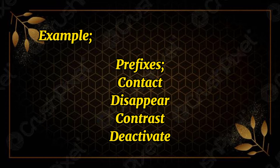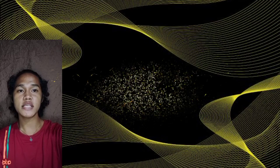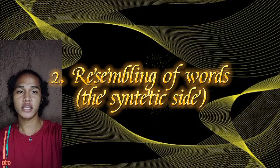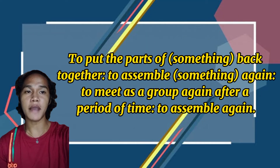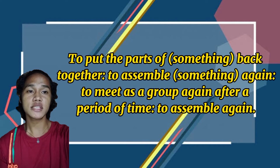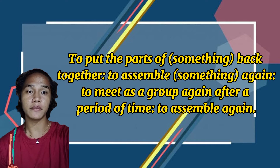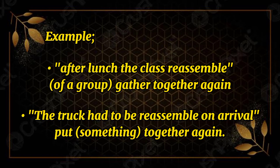If you don't know the meaning of a word, you can often break it down into smaller parts and analyze those parts. The second one is the reassembling of words, or the synthetic side — to put the parts of something back together. For example, after lunch, the class reassembled, meaning a group gathered together again. The truck had to be reassembled on arrival, meaning to put something back together again.